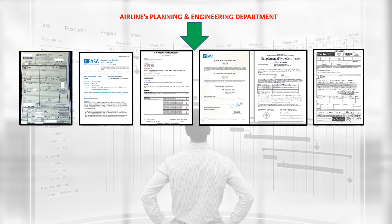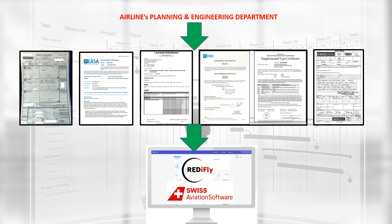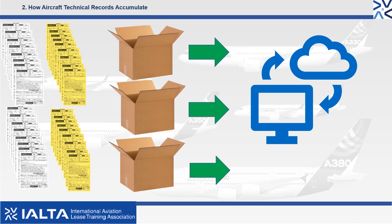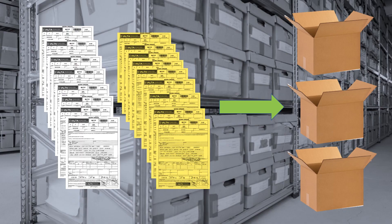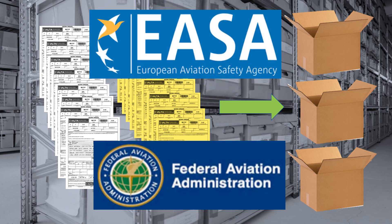The scheduling and control of the airworthiness will often be done by a software program like RediFly or AMOS. Separate from the airworthiness platform, airlines will also use cloud-based products to store electronic copies of the records and to assist with sorting and indexing of files. Despite having cloud-based programs for electronic copies of the technical records, the safety agencies and regulatory departments like EASA in Europe and the FAA in the United States require that all technical records are also to be kept in hard copy format.